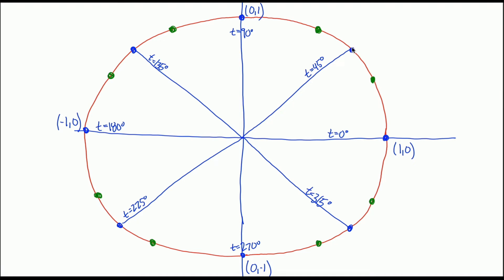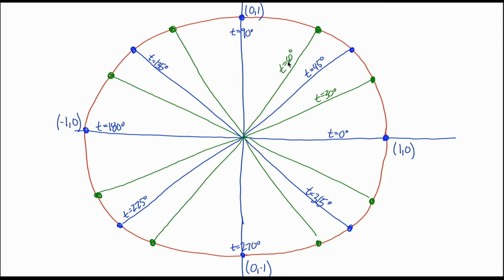The green points are one-third and two-thirds of the way between 0 and 90 degrees. One-third of 90 is 30 degrees, and two-thirds is 60 degrees. Knowing those, we can get 30 and 60 more than 90: so 120 and 150. Then 30 and 60 more than 180 gives us 210 and 240. And 30 and 60 more than 270 gives 300 and 330. You can also just add 30 degrees each time: 0, 30, 60, 90, 120, 150, 180, 210, 240, 270, 300, 330.